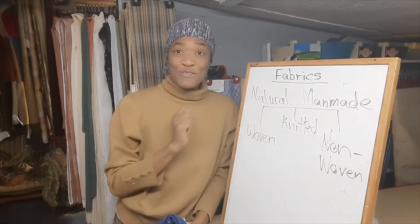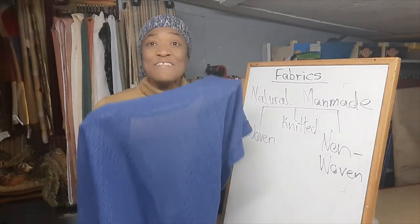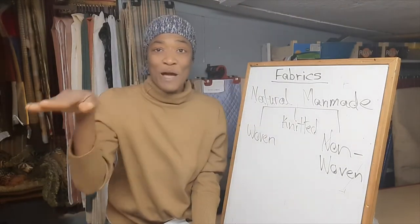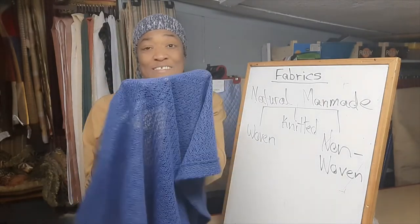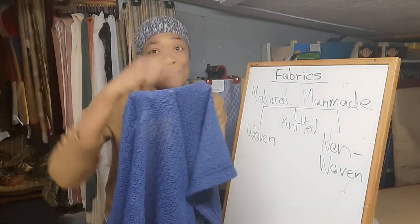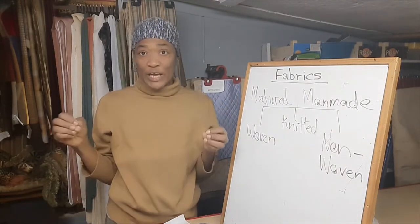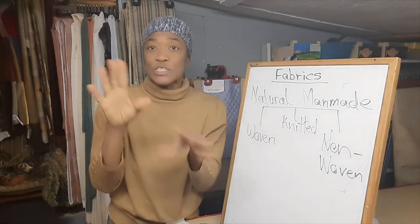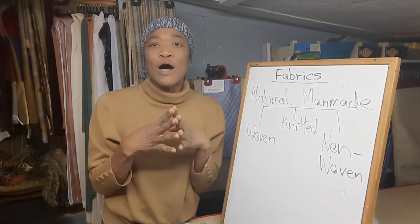Now let's look at the third type: knitted fabrics. They don't have a warp and they don't have a weft. They have instead one piece of yarn that forms a series of loops that gives you your fabric. It's like when you are crocheting — you're using just one piece of yarn at a time to make all those fancy patterns, or to knit.